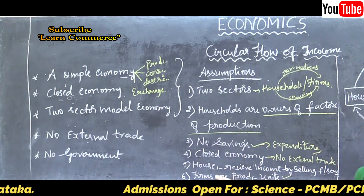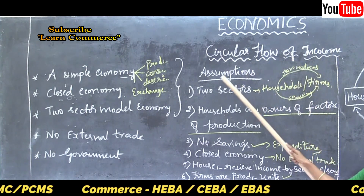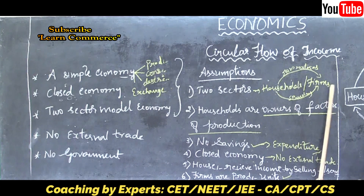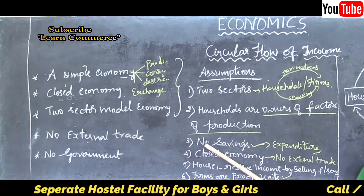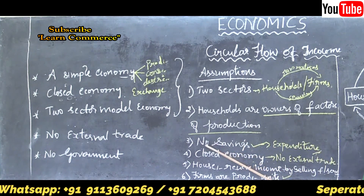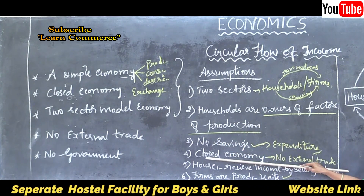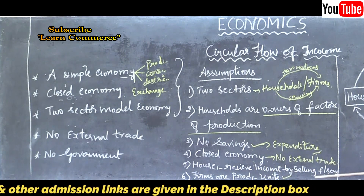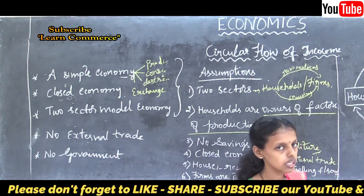On the basis of these six assumptions, the theory of circular flow of income in a simple economy is built. First: only two sectors — household and firms. Second: households are owners of factors of production — land, labour, capital, and organisation. Third: no savings. Fourth: closed economic system with no external trade. Fifth: households receive income by selling factor services. Sixth: firms are the production units.